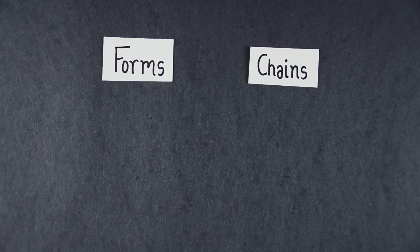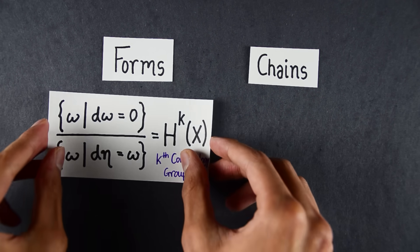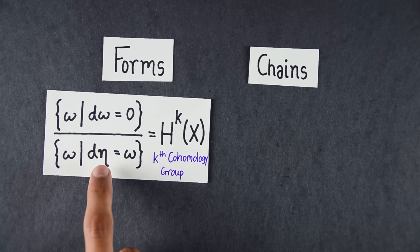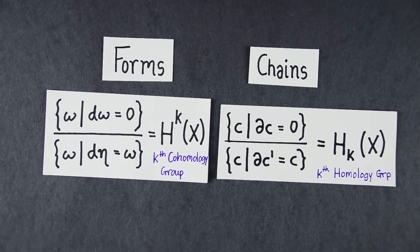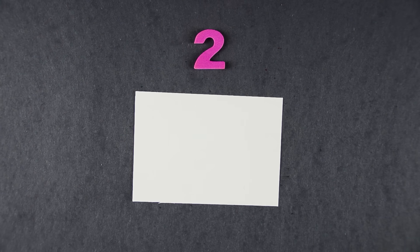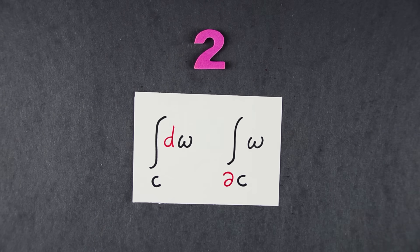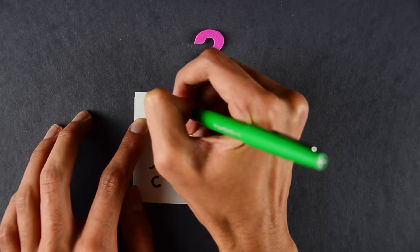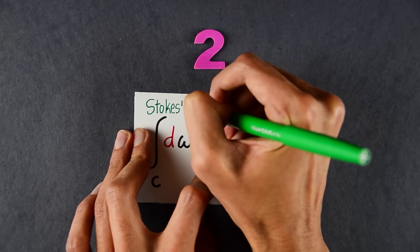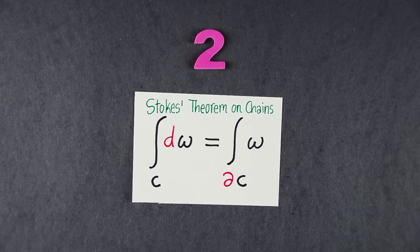You have two worlds, the world of forms and the world of chains. A form is something you integrate. A chain is something you integrate over. A form with derivative zero that's not the derivative of anything else is a hole. And a chain with boundary zero that's not the boundary of anything else is also a hole. These worlds are mirror images of each other. The only thing that would be crazier was if, say, taking the derivative and then integrating was the same as taking the boundary and then integrating. And crazily enough, it is. This is called Stokes' theorem on chains, the fundamental theorem of calculus in higher dimensions.